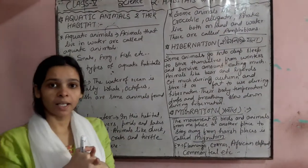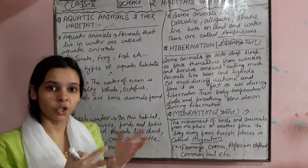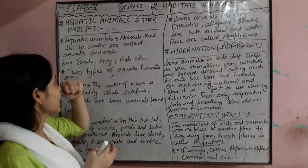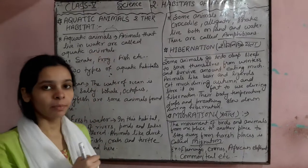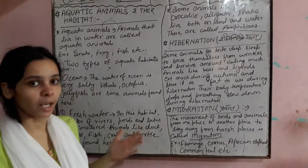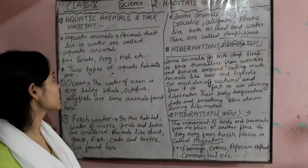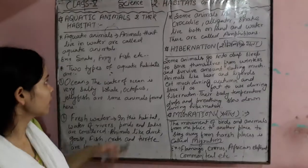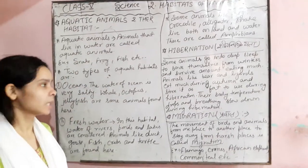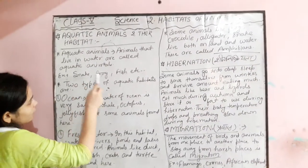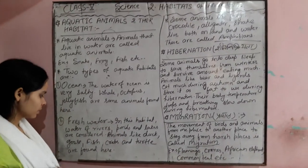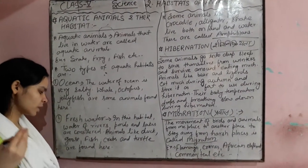First of all, let's understand aquatic animals. Aquatic means water. So animals that live in water are called aquatic animals. For example: snakes, frogs, fish, crabs, ducks, etc.